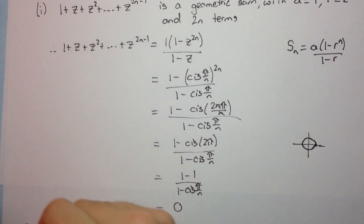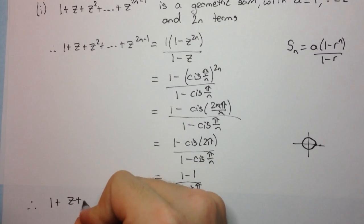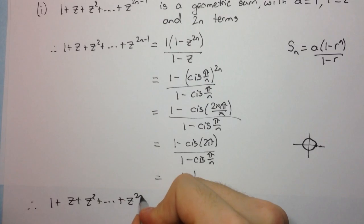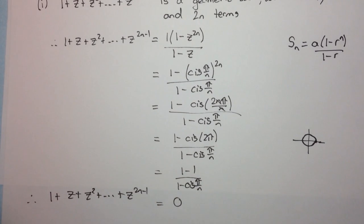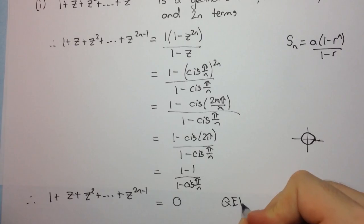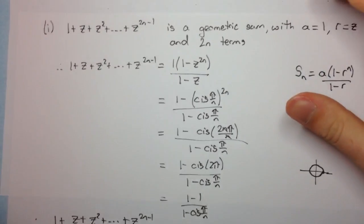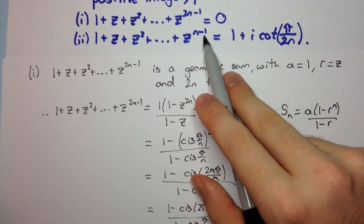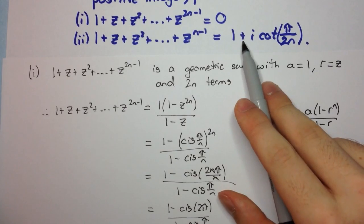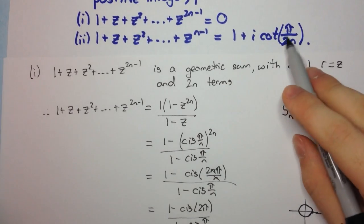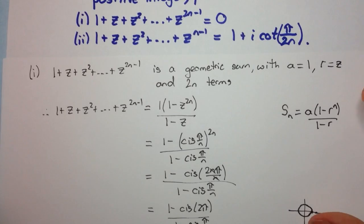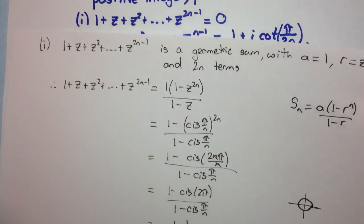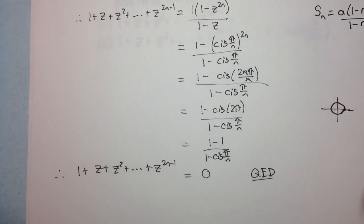Therefore, we've shown that 1 + z + z² + ... + z^(2n−1) equals 0. QED. Now let's look at part 2, where we sum up to z^(n−1) and need to show it equals 1 + i·cot(π/2n). The 2 in the denominator of 2n might give you a hint.